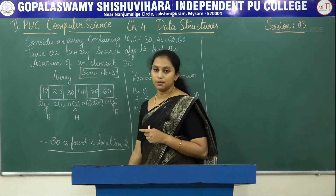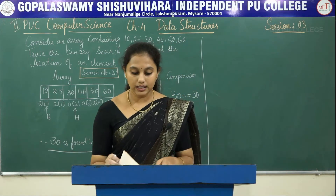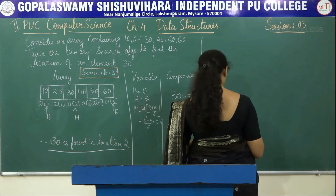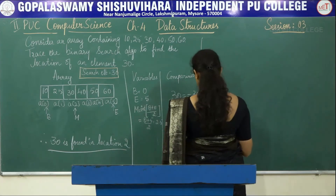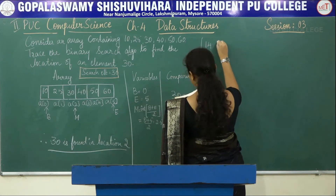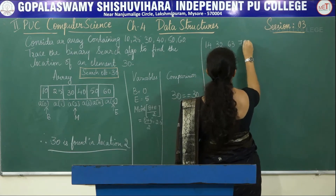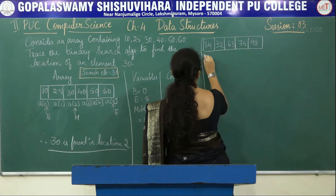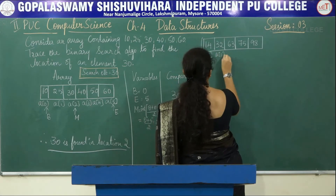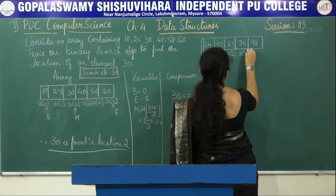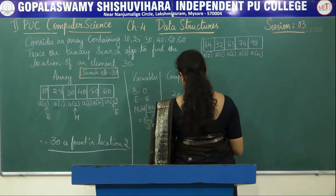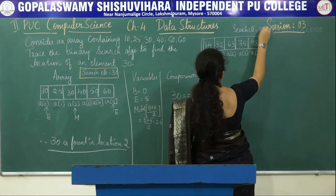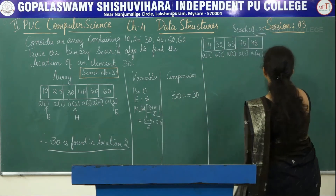Now let's see another example. The array contains 14, 32, 63, 75, and 98. The search element is 75.